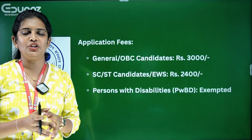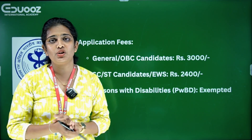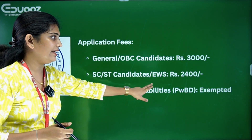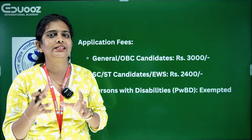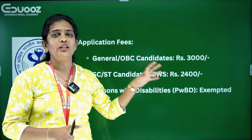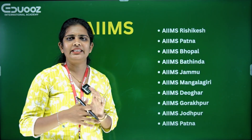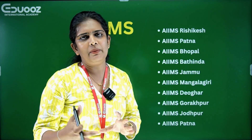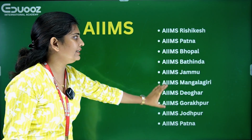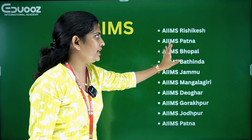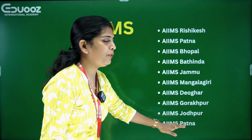The application fee for General and OBC candidates is 3,000 rupees, and for SC/ST candidates it is 2,400 rupees. The application process ends with a fee payment step. AIIMS locations include: Rishikesh, Patna, Bhopal, Bathinda, Jammu, Mangalagiri, Deogar, Gorakhpur, and Jodhpur.